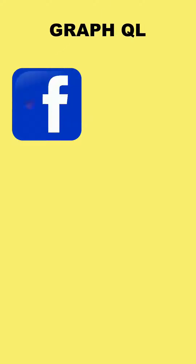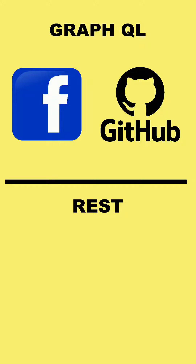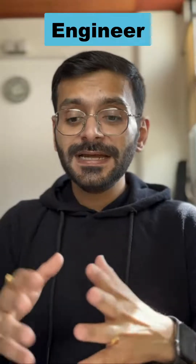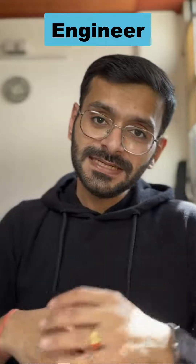Got it. So any real life examples? Major companies like Facebook and GitHub use GraphQL for their APIs — it helps them handle complex queries and deliver a tailored experience to users. REST, on the other hand, is used by giants like Twitter and YouTube for its simplicity and efficiency. So the choice basically depends on your project's needs.